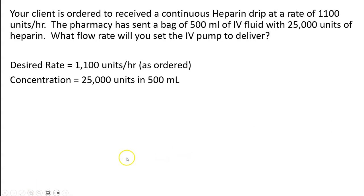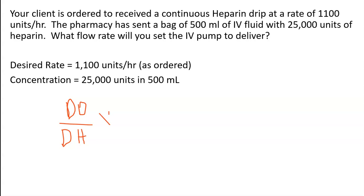So in that case, you would use the formula: dose order — I'm going to write that as DO — dose order over dose on hand times the volume. Remember, it's asking you what rate will you have to set the pump, and that's in mls, in order to get the 1,100 units per hour. The formula is dose order over dose on hand times the volume.